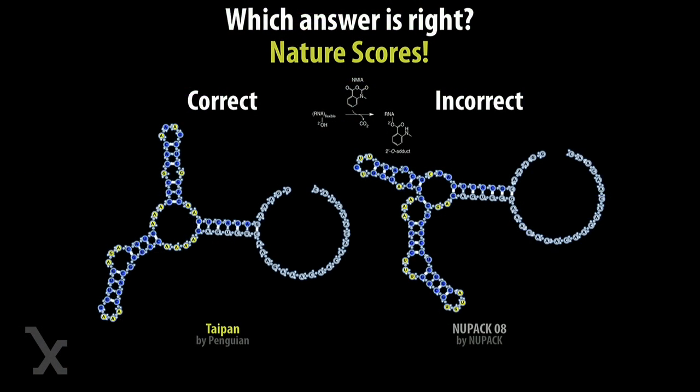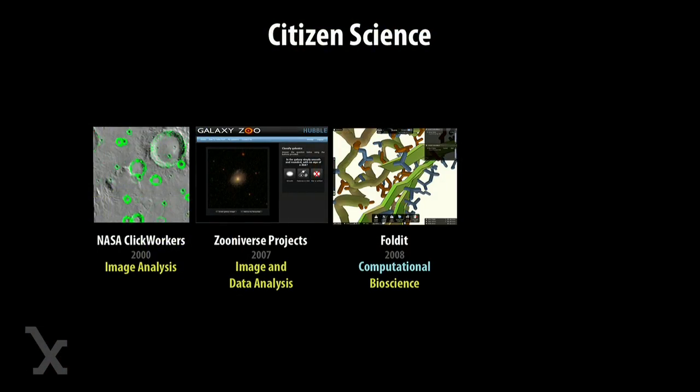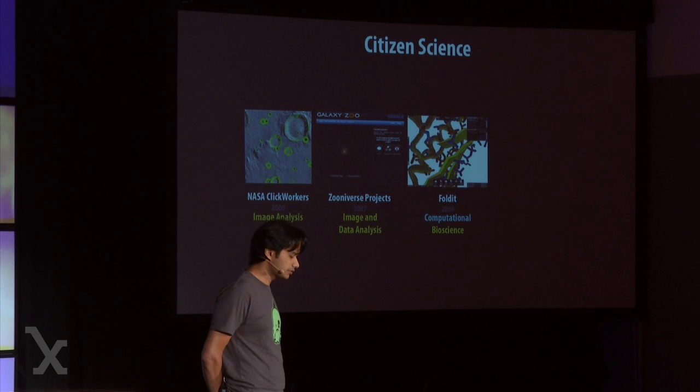There's an extra twist: the incorrect design on the right came from the most sophisticated computational method we have, the NuPak algorithm developed at Caltech. The correct design on the left, named Taipan, was created by a video game player named Penguyan, who had no prior expertise in RNA structure or design. This is an intriguing example of how a game-playing human can beat a computer. There was precedent — in the early 2000s, NASA Clickworkers and Galaxy Zoo enabled volunteer networks for astronomy. In 2008, the Foldit video game had players compete at protein folding, and a group solved the structure of a retroviral protease that had eluded scientists for the previous decade.